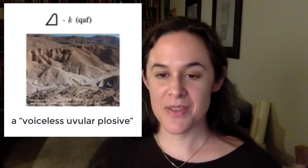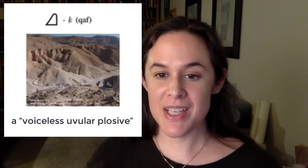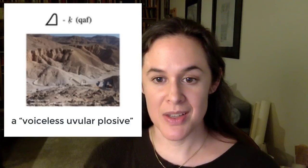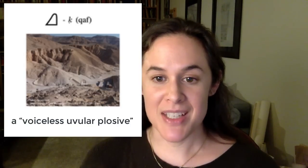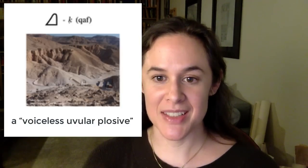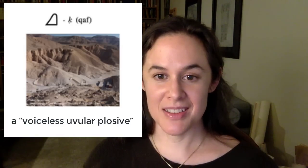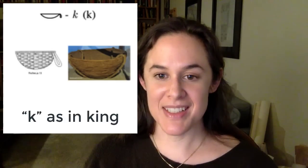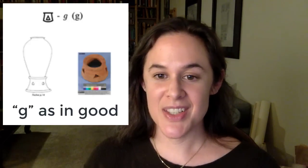Then we have the hieroglyph that we call Qof. It's represented in the traditional system of transliteration as a K with a dot underneath it — in the European system, as the letter Q. It's pronounced like the Arabic letter Qof, and I've included links so you can hear it correctly. The Qof is a depiction of a hill, like the kind you see in the Valley of the Kings. Next, we have the hieroglyph pronounced K as in 'king,' depicting a basket with a handle. After that comes G as in 'good,' which shows a circular stand used to hold jars with tapered bottoms.